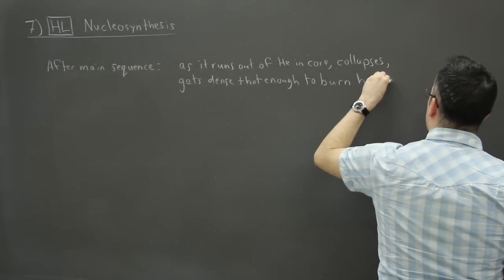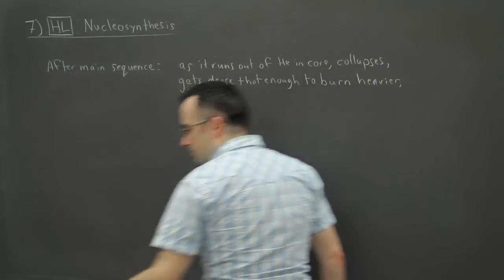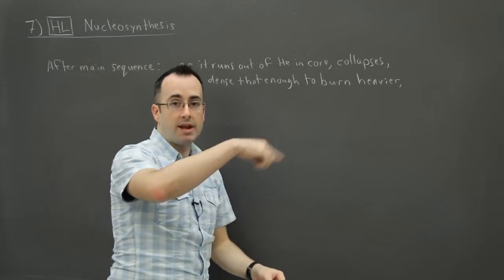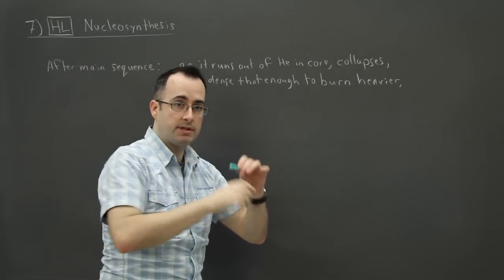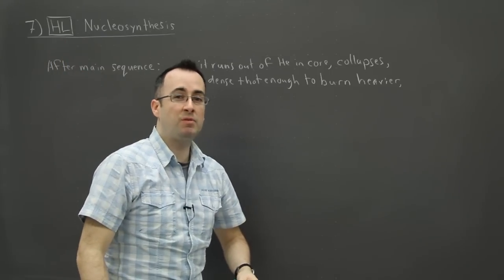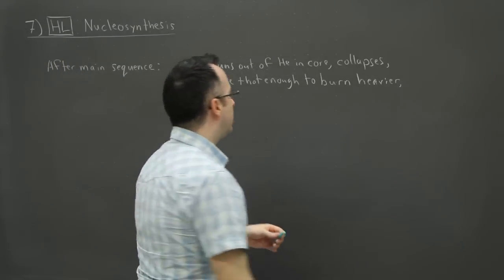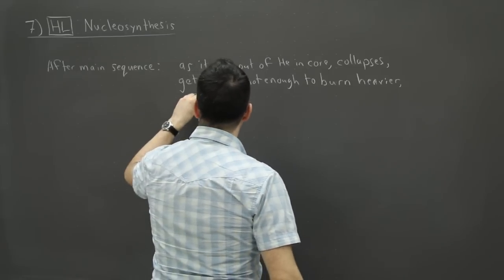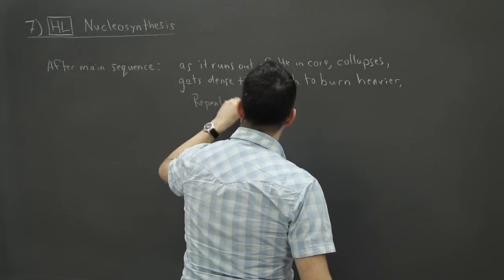Now depending on the mass of the star, it repeats this process. So this process right here, then it's going to burn the next thing and then after that it's going to run out of that one. Core collapses, the outer parts expand even more. It can become even what's called a red supergiant because it's even bigger. But in any case, this process repeats and repeats some more.